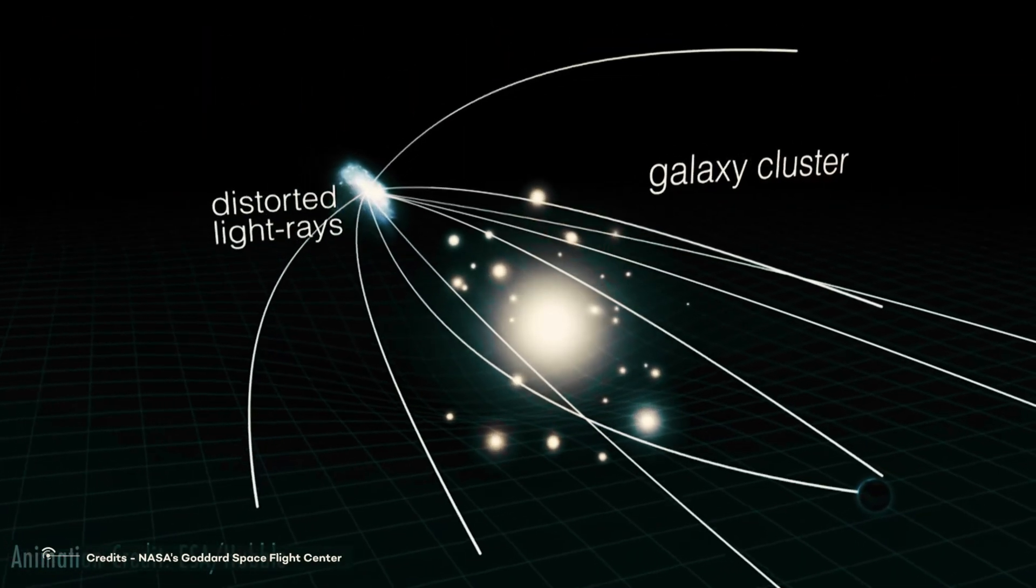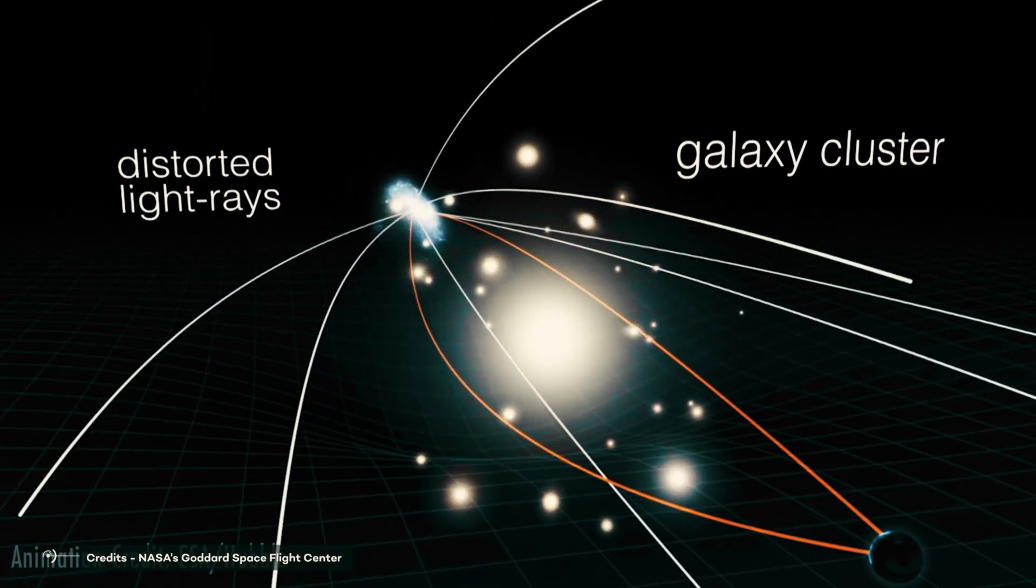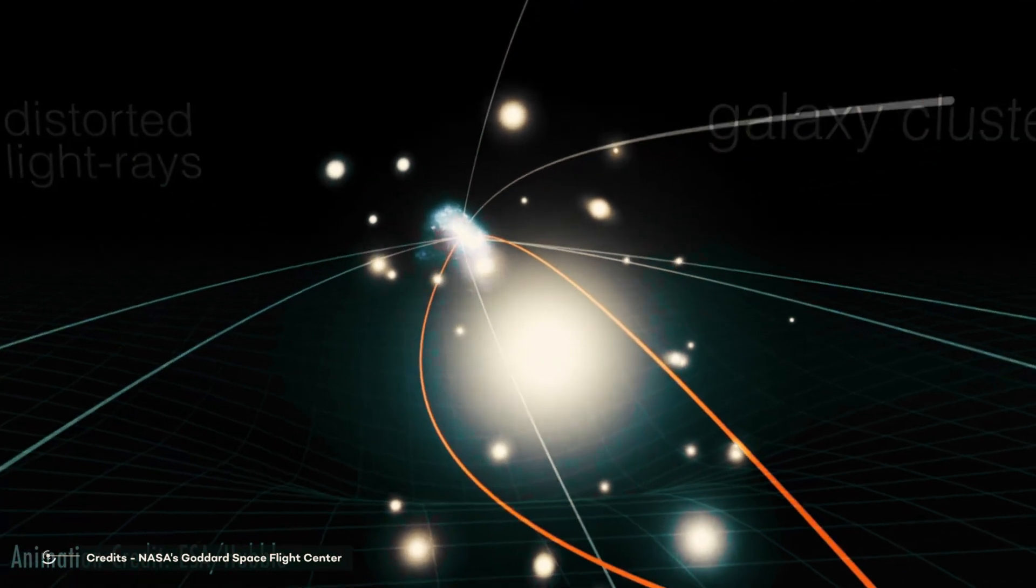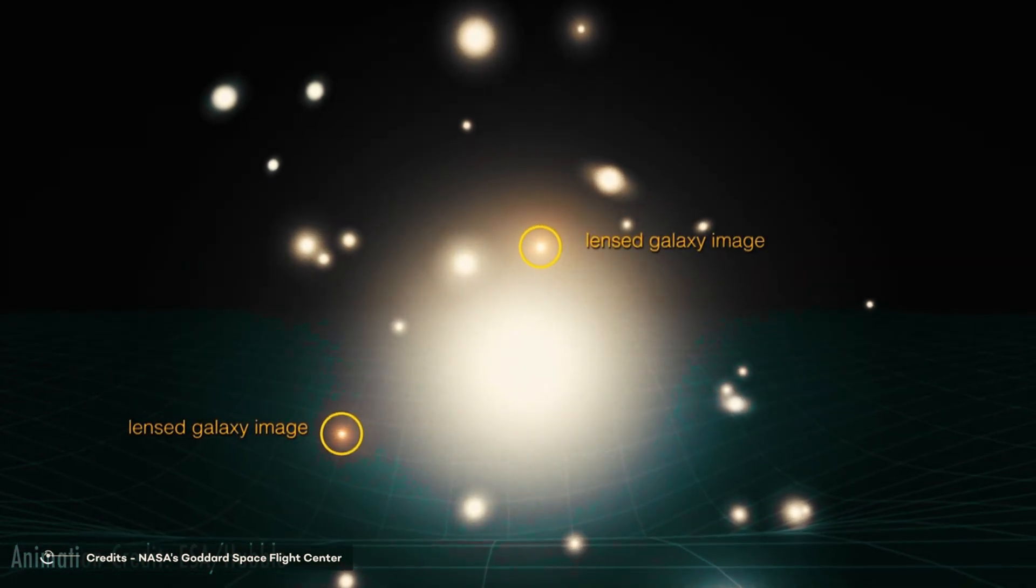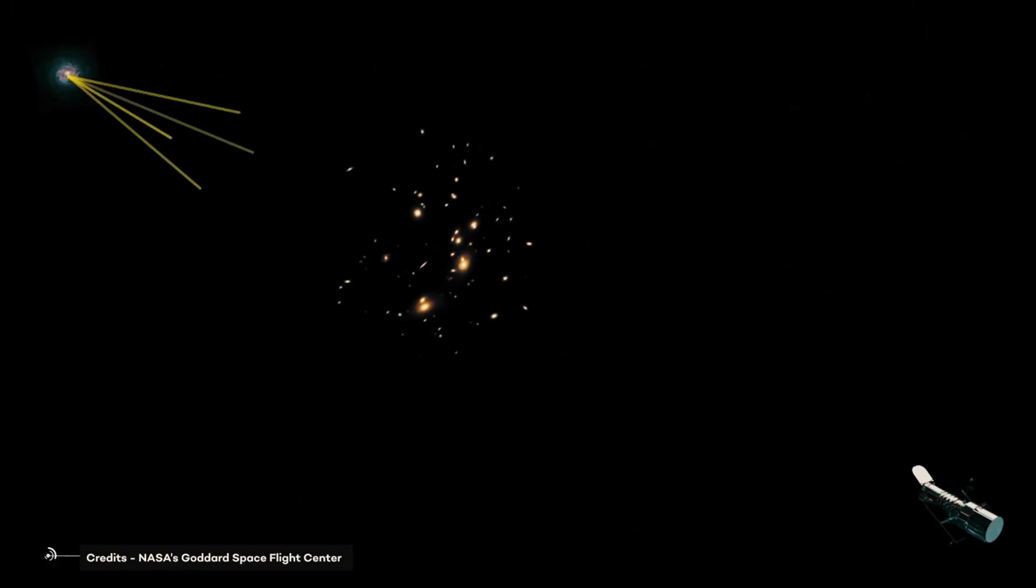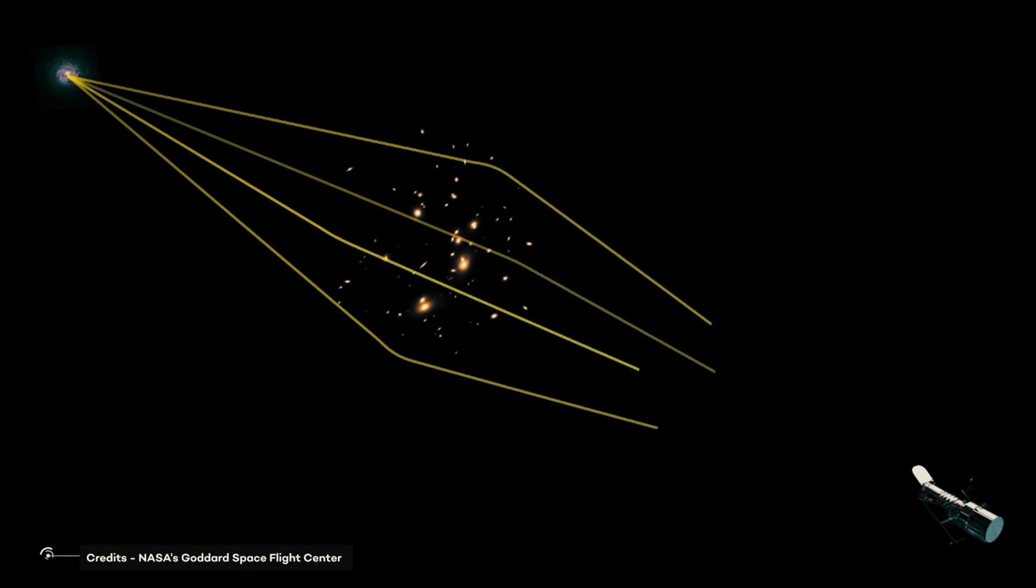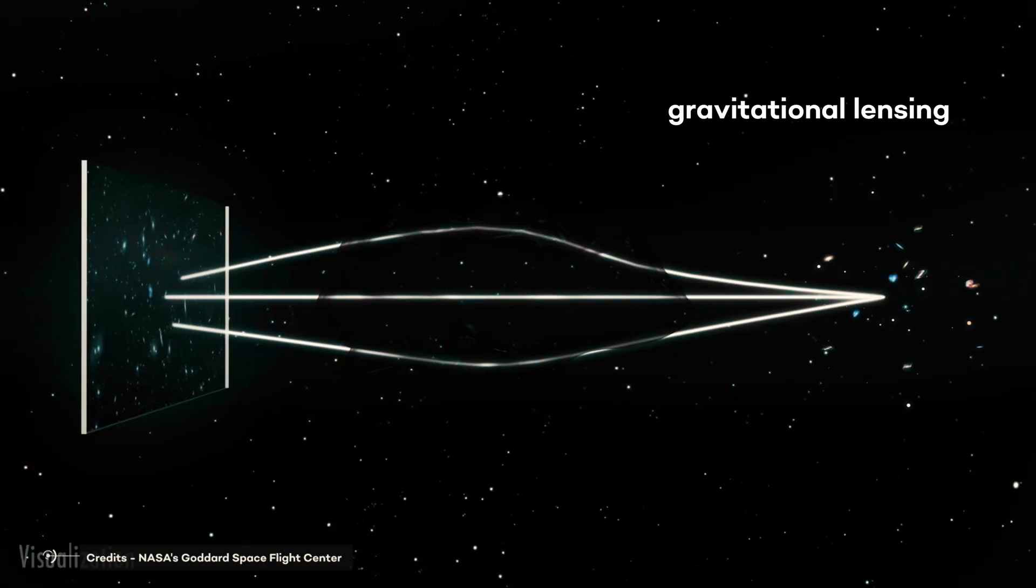Third, dark matter is not antimatter, because we do not see the distinctive gamma rays produced when antimatter collides with matter. Today, we know that dark matter is present in almost all galaxies, and is the explanation for the hidden matter in galaxies. We have confirmed the presence of dark matter by a process called gravitational lensing.